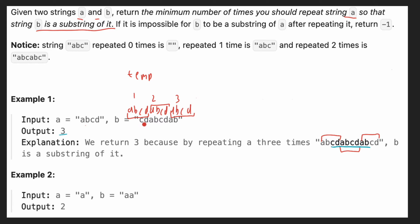The next step is we are searching in our new temp string whether B is a substring of temp. So our first rule is: we create a new string temp and keep adding A until the size of temp is more than or equal to the size of B. If after that B is a substring of temp, then we return that count value.